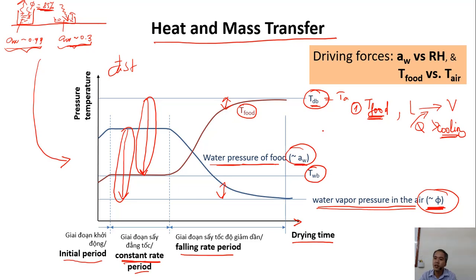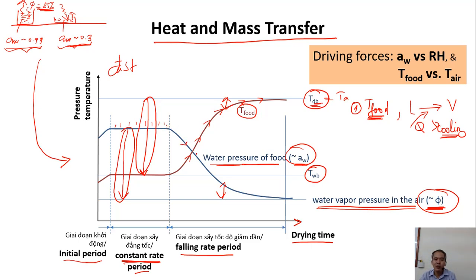Once free water on the surface has all evaporated, the remaining water is bound and more difficult to evaporate. Now the temperature of the food starts to increase and approaches the dry bulb temperature of the air. The water activity of the food, which was almost 1 while free water was present, now goes down as water becomes more and more bound, approaching the relative humidity of the drying air.